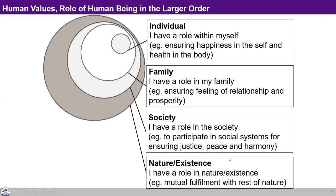So we can see here: at the level of the individual, I have a role within myself — for example, ensuring happiness in the self and health in the body. This is my role. I, as a self, have to ensure a state of continuous happiness in the self. This is my value. And I have to ensure health in the body. At the level of family, I have a role in my family — for example, ensuring this feeling of relationship in the family. So this feeling of relationship is a value.